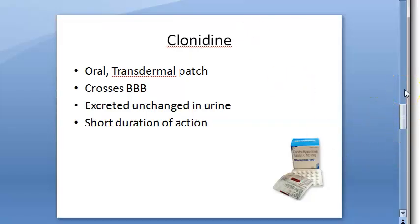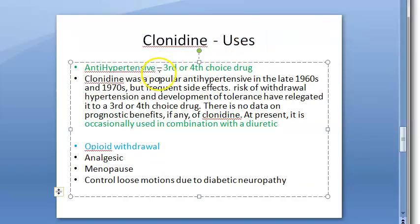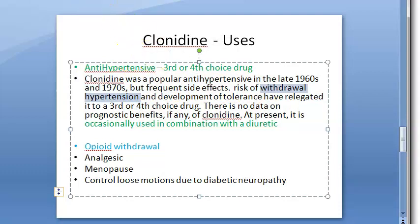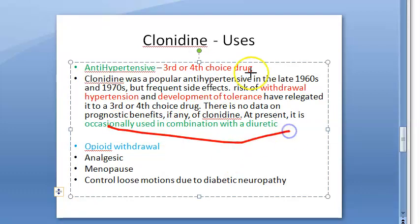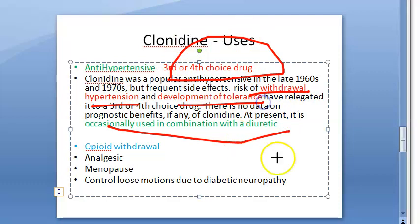The main use of clonidine is as an antihypertensive, but it is not used much anymore. It is occasionally used in combination with a diuretic. It has been reduced to a third or fourth choice because of the risk of withdrawal hypertension — if missed, blood pressure can rebound dangerously. Some patients also develop tolerance to it.